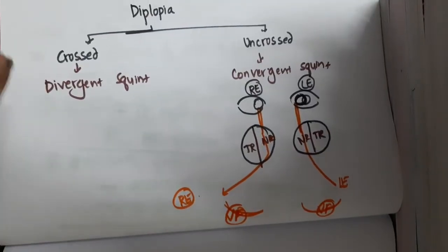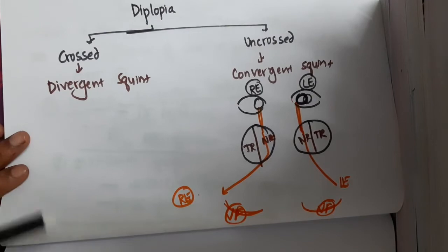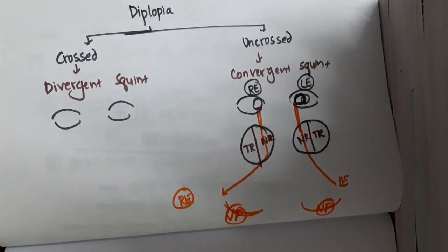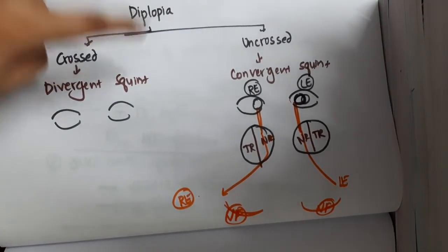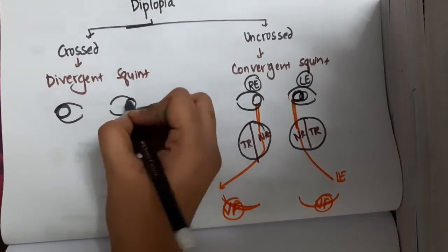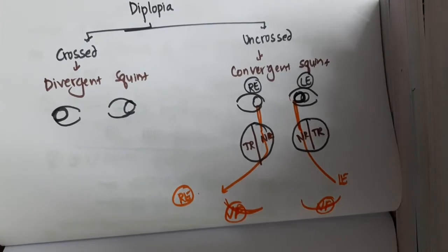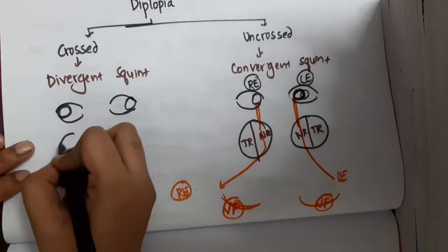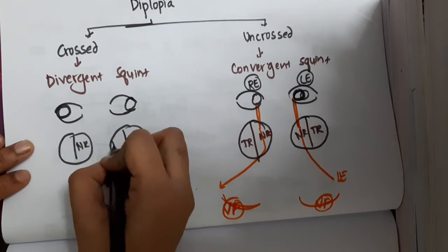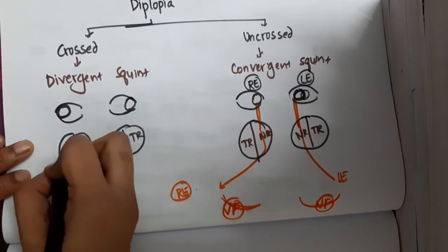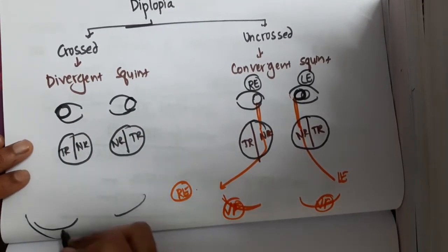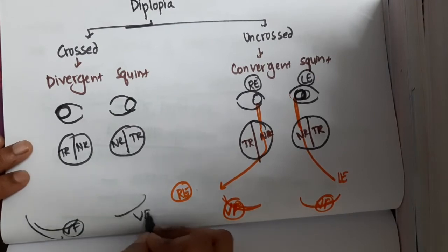Now let me draw the same image for divergent squint, so you will get a clearer picture. In divergent squint the eyes are away from each other — divergent. We again have nasal retina and temporal retina for each eye, and visual fields on each side.